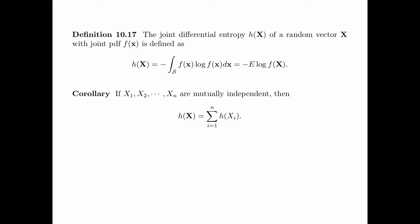As a corollary of this definition, if x1, x2, up to xn are mutually independent, then the entropy of the random vector x is equal to the summation of the entropy of the individual random variables. With Definition 10.17, we have a vector generalization of the translation property.